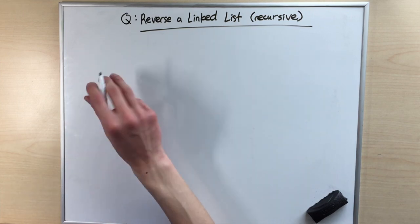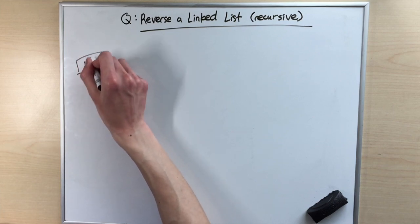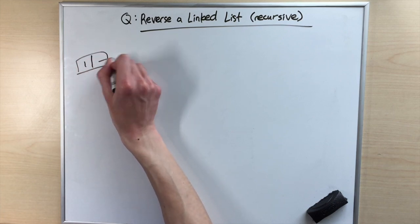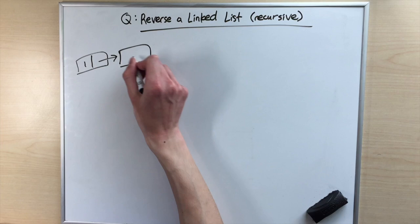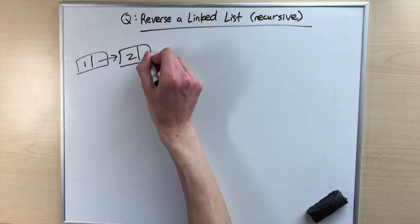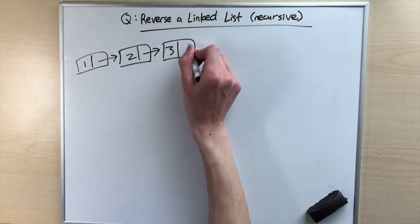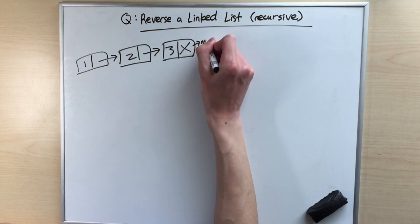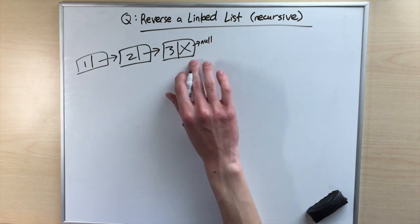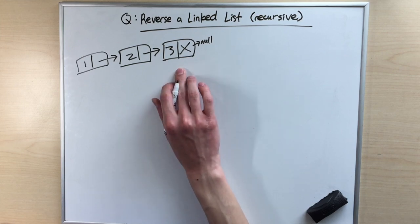Let's take a linked list with three nodes. The first node contains the value of 1. It points to another node containing the value of 2. It points to a third and final node containing the value of 3. This last node points to null, which means no more nodes after this node — so this is the end of our linked list.